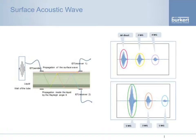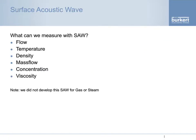So, what we've learned is that with surface acoustic wave, we can measure flow, temperature, and density, and we can calculate mass flow, concentration, and viscosity. I should note that we developed this surface acoustic wave technology for liquids. For the moment, we can do flow and temperature. In the lab, we have done density, and that will be one of the next steps to develop further.